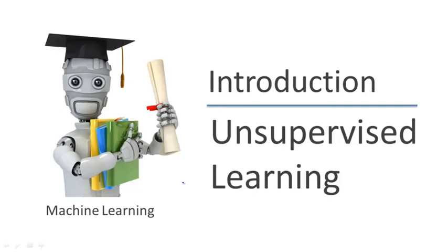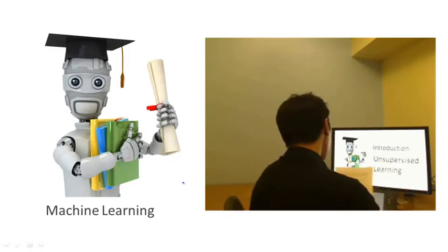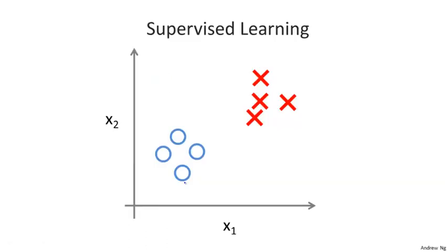In this video, we'll talk about the second major type of machine learning problem called unsupervised learning. In the last video, we talked about supervised learning. Back then, we got data sets where each example was labeled either as a positive or a negative example, whether it was a benign or malignant tumor. For each example in supervised learning, we were told explicitly what is the so-called right answer, whether it's benign or malignant.